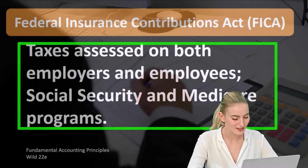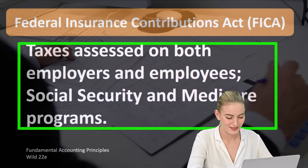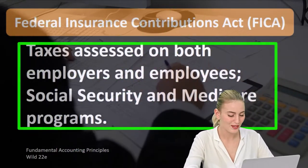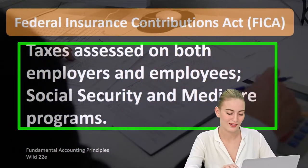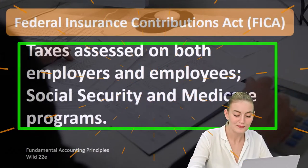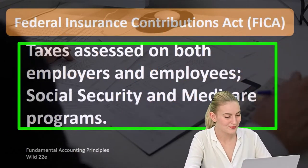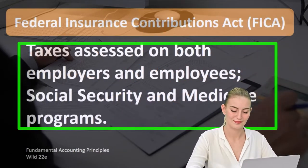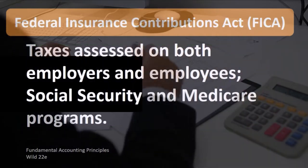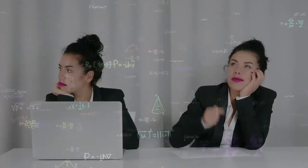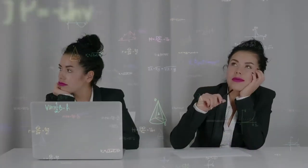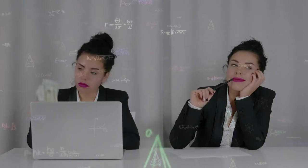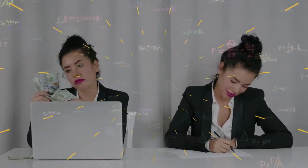When we're talking about FICA, we're not talking about just Social Security — we're talking about both Social Security and Medicare. These are generally thought of as payroll taxes, taxes that are going to be withheld from the employee pay, at least half of them.